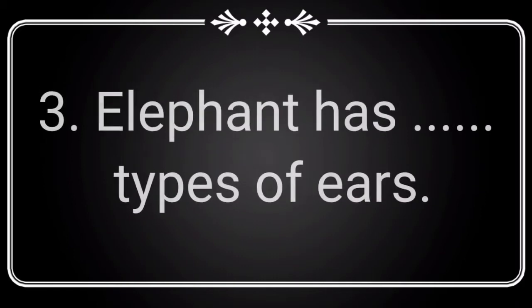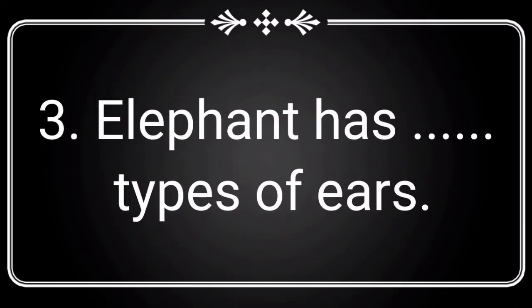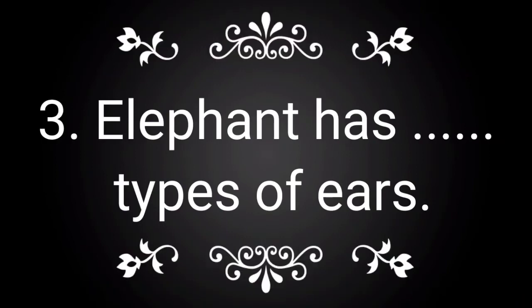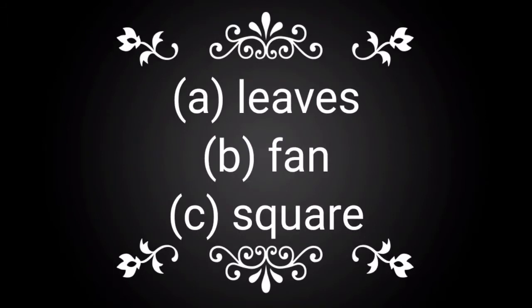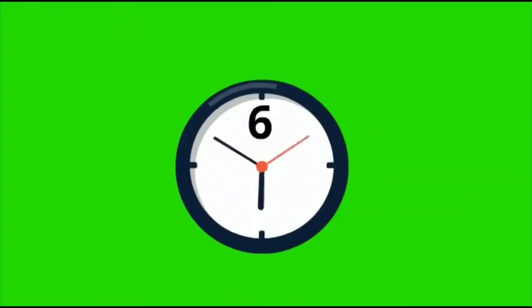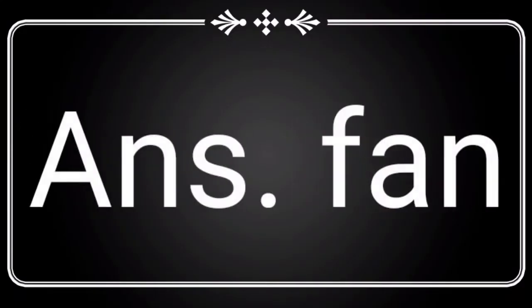Question number 3: Elephant has dash types of ears. You have to say about the ear of the elephant. You have three options — Option A: leaves, Option B: pan, Option C: square. Think the correct answer within 10 seconds. The correct answer is pan. Pan is the correct answer for this question.